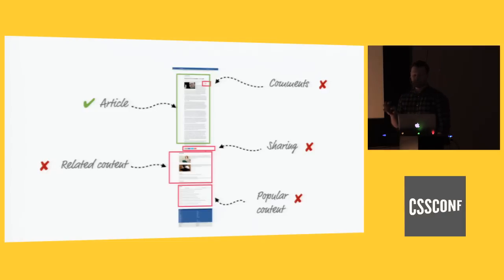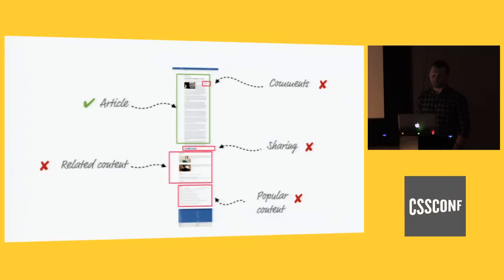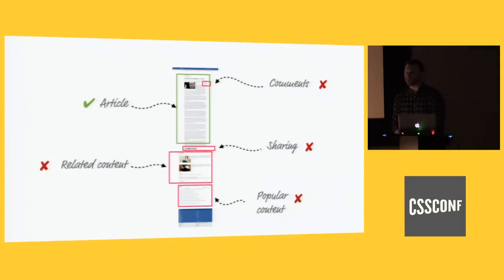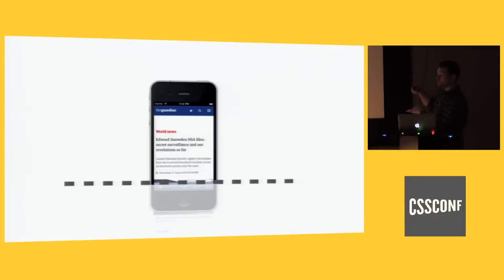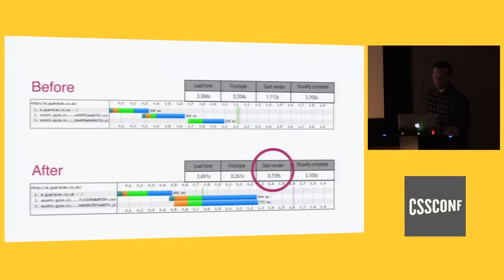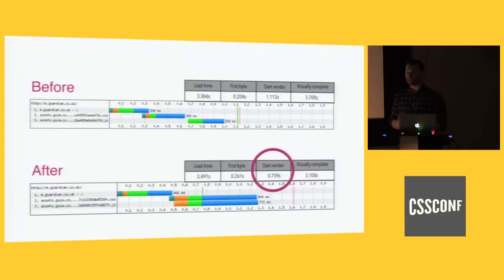What The Guardian actually does is render the article content first, then later load in the sharing, related content, and popular content using AJAX or maybe local storage. Beyond that, they experimented with inlining their CSS — just the above-the-fold CSS, the actual critical path styles. What they found is that when they inlined their CSS, their performance for onContentLoad and DOM ready dropped by 600–700 milliseconds. When you're on a phone and you've got a budget of two seconds or maybe one second to get content to your users, 600–700 milliseconds is pretty significant.